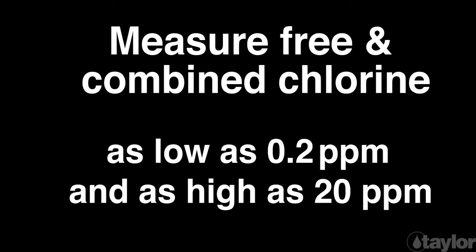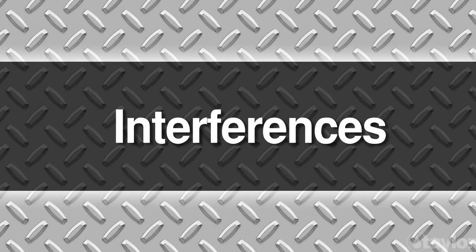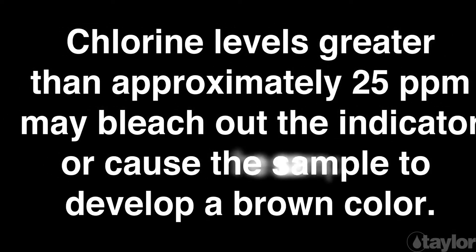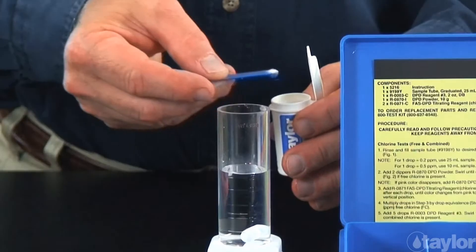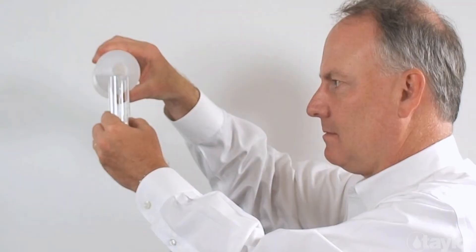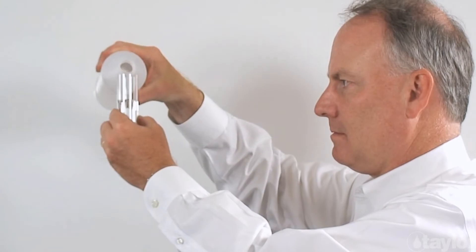FAS DPD allows users to measure free and combined chlorine as low as 0.2 parts per million and as high as 20 parts per million. Added together, this is the total chlorine concentration. Chlorine levels greater than approximately 25 parts per million may bleach out the indicator or cause the sample to develop a brown color. To prevent this interference, add more DPD powder or dilute the sample with DI water as necessary and retest.